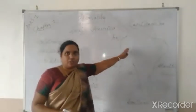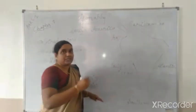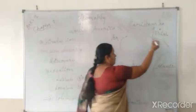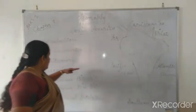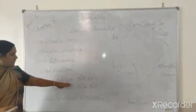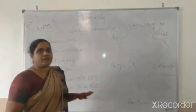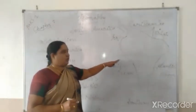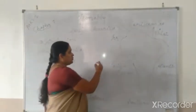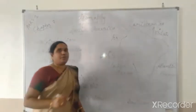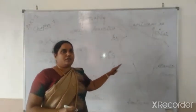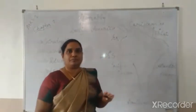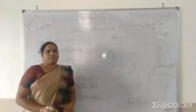The equator is the first important line passing through South America. Its latitudinal extent is 13 degrees North to 55 degrees South, so part of it lies in the southern hemisphere. The next important line is the Tropic of Capricorn, at 23.5 degrees South, which also passes through South America. So two important latitudes pass through this continent.